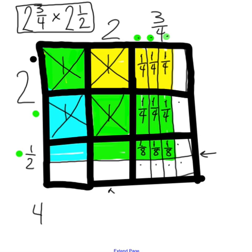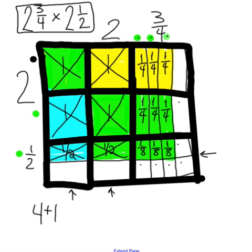There are two more boxes not yet labeled. Each of those boxes is represented by one-half. Now looking at the fractions: one-half plus one-half equals one whole, so those halves are crossed out and replaced below with one whole. Four-fourths equal one whole, so four of the fourths are crossed out and replaced below with one whole.